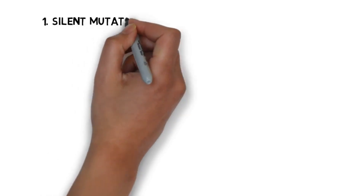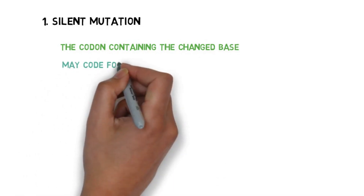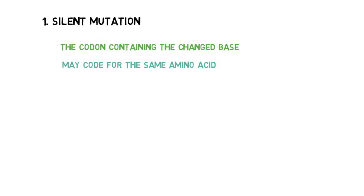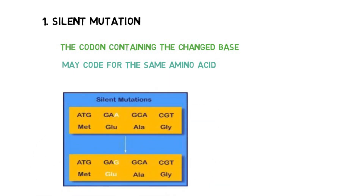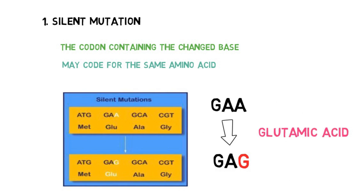First, we see silent mutation. In silent mutation, the codon containing the changed base may code for the same amino acid. That means the codon will change, but the new codon will still code for the same amino acid as the original. For example, as shown in the diagram, codon GAA is replaced and becomes GAG. GAA coded for glutamic acid, and the replacement GAG also codes for glutamic acid. Because of this, we see no change — that is why we call it silent mutation.